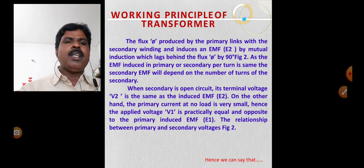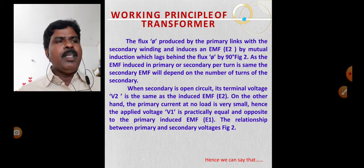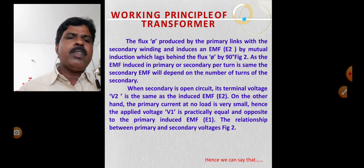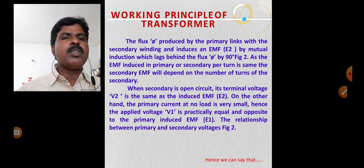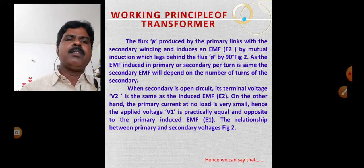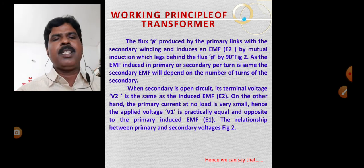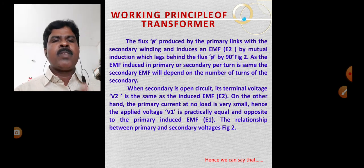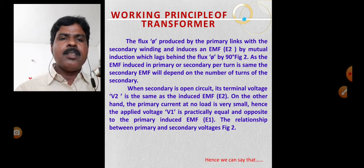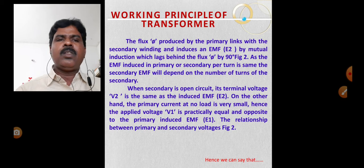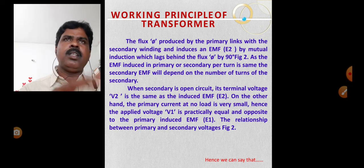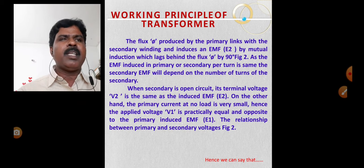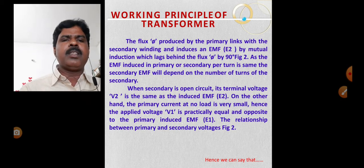The secondary EMF depends on the number of turns of the secondary. It is called 1 volt per turns voltage — the primary per-turn voltage is the same as the secondary per-turn voltage. For example, if primary has 230 turns at 230 volts and secondary has 100 turns, then secondary gets 100 volts — 1 volt per turn.